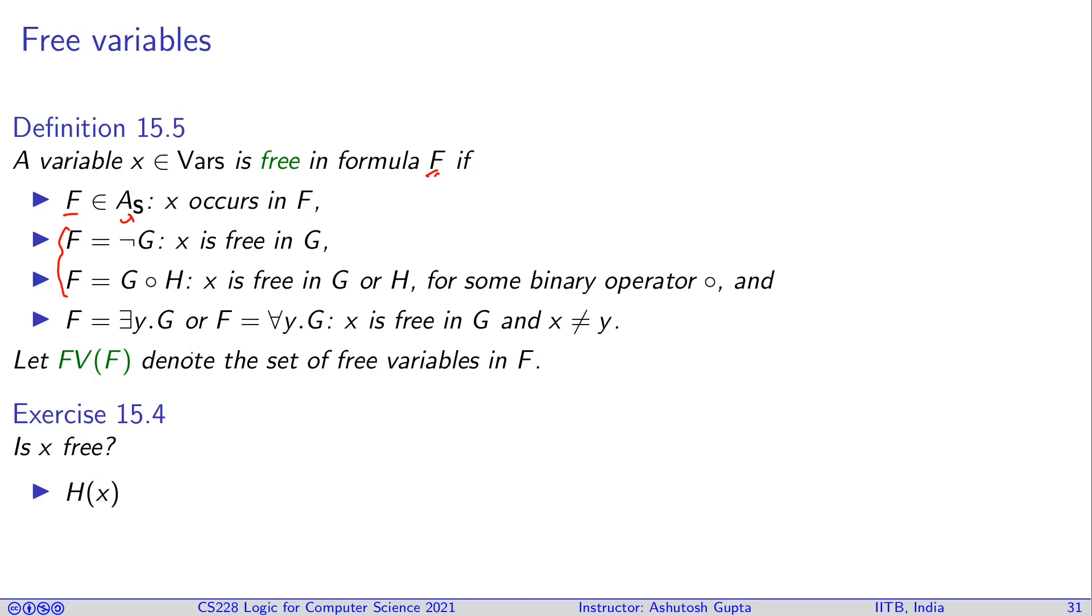The important trick is in quantifiers when some variable gets quantified. And if it was free inside G, then it becomes not free. So how do we say that? If x is free in G and x is not equal to y, if y is not the variable which you were worried about, then you say it is still free. And let FV(F) denote the set of free variables occurring in the formula F.